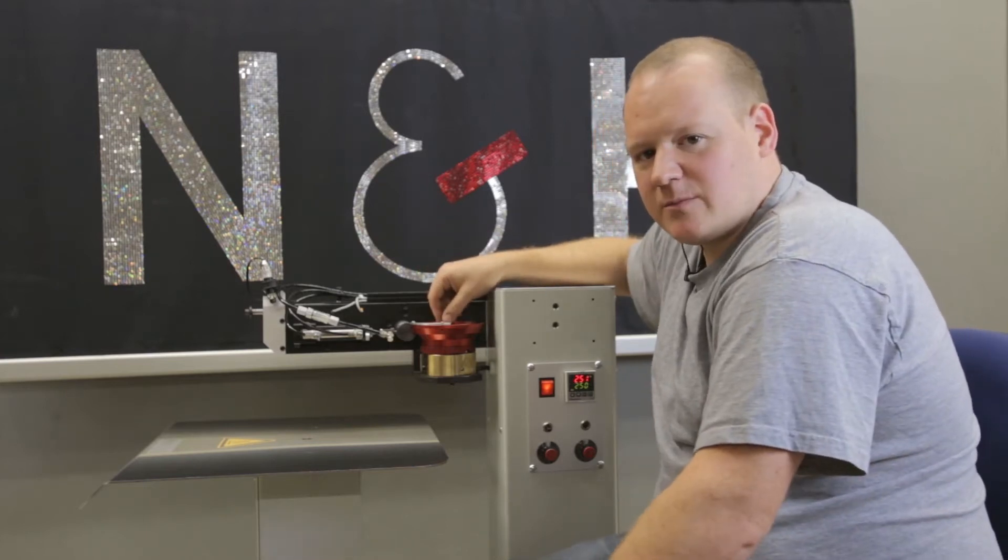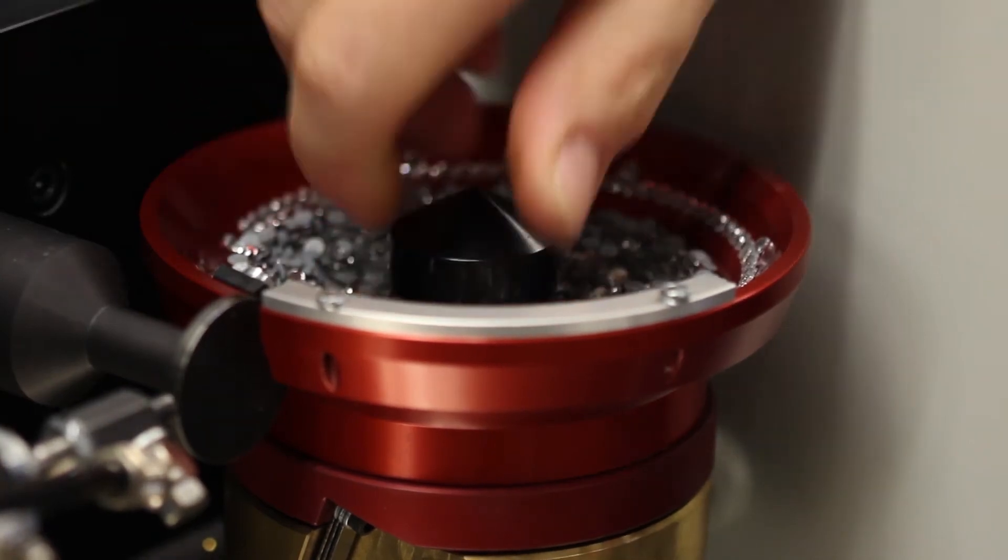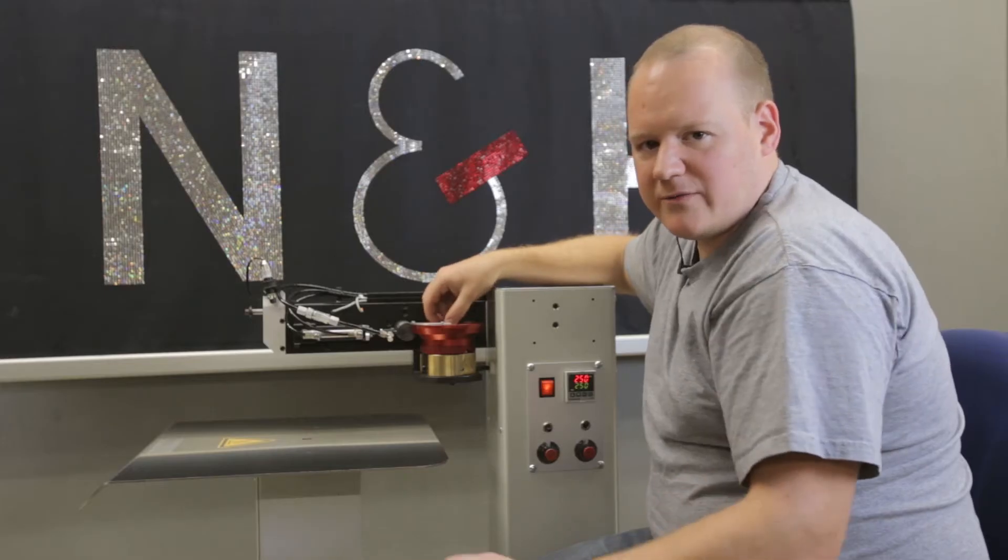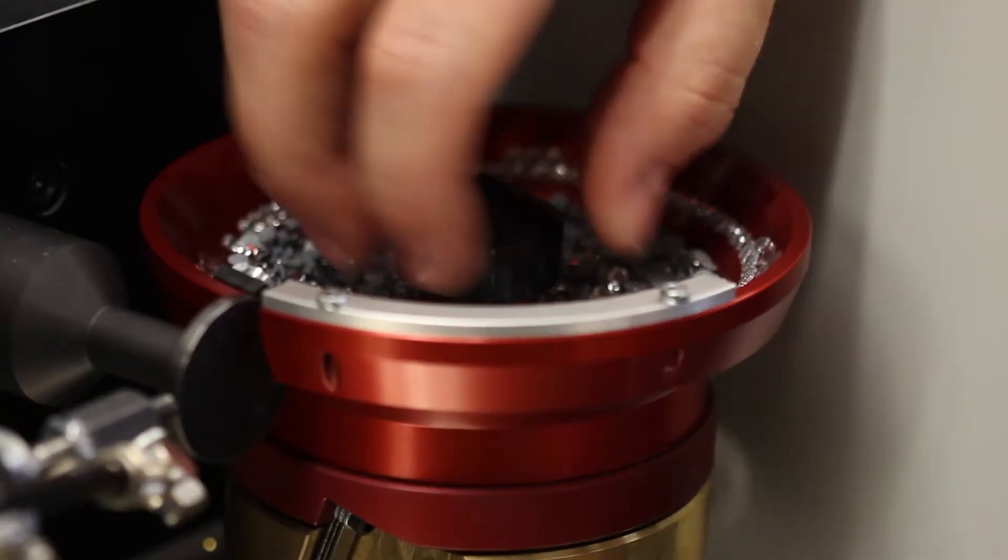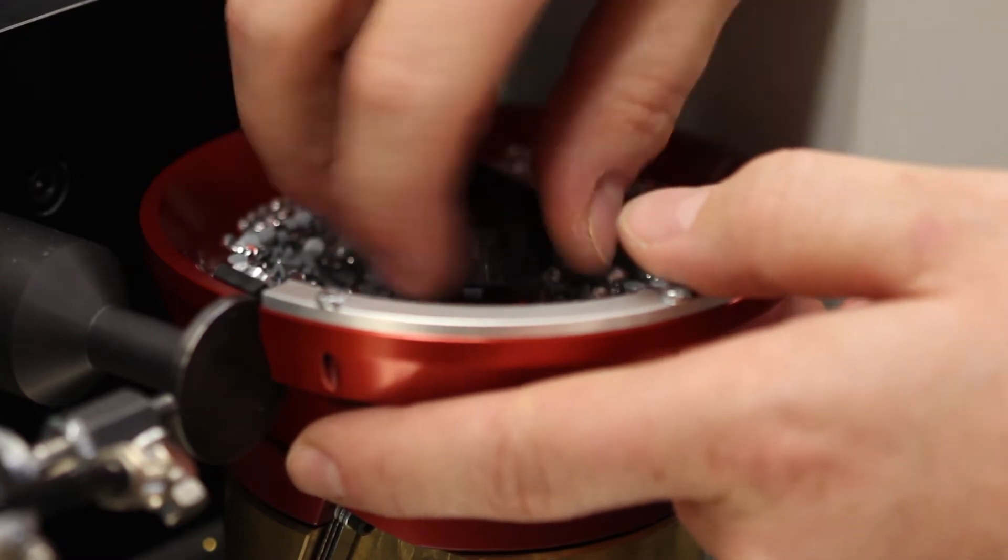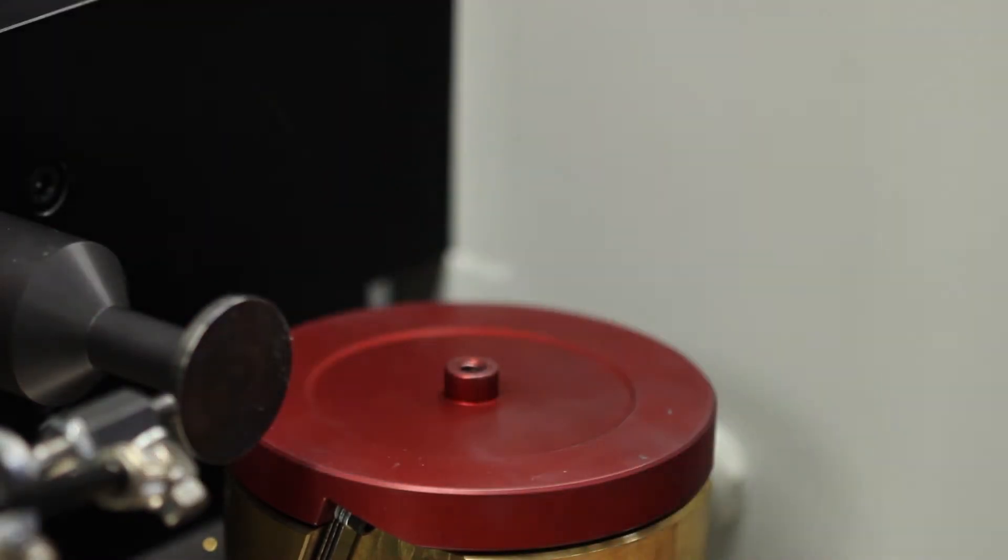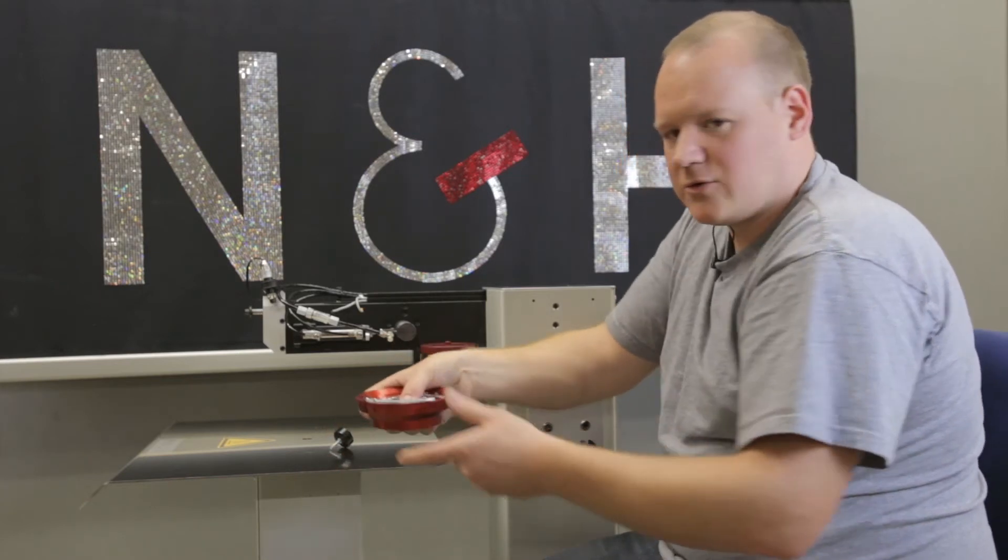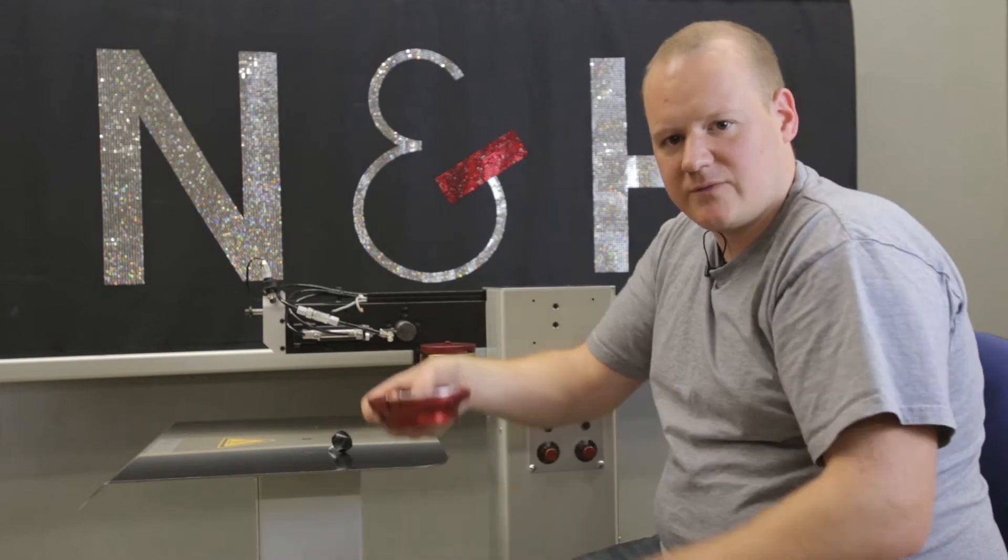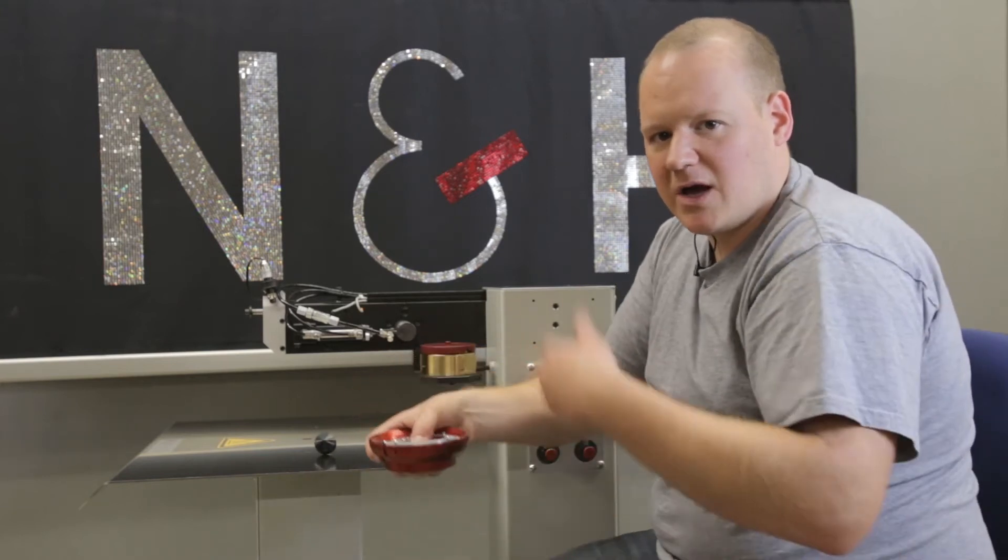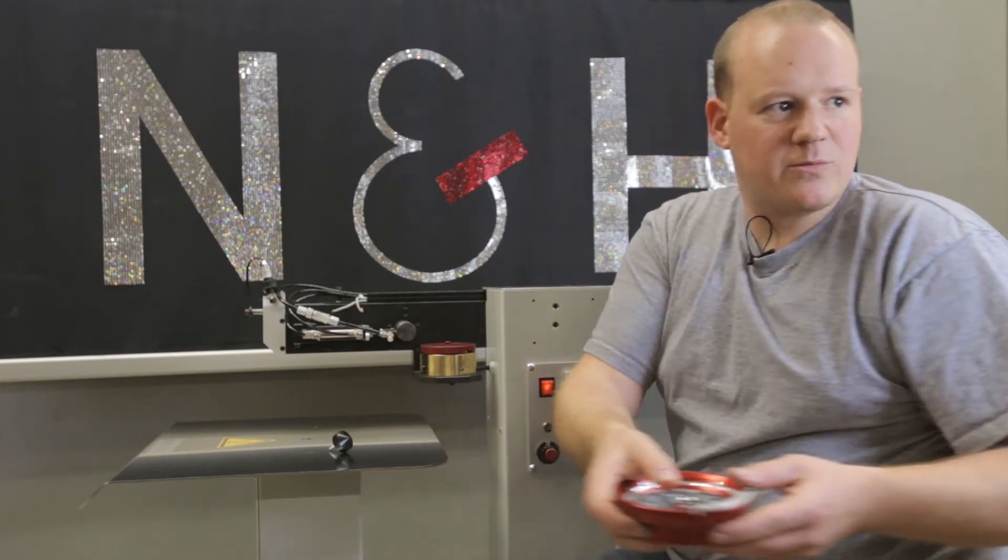To change a pot, you just have to open this cap here. Or if you want to change the color of the elements, you do it the same way. You can open it, put away the pot. Now you just put out the stones, put new stones in if you want to use the same pot. I want to change, for example, the size. So I change also the pot.